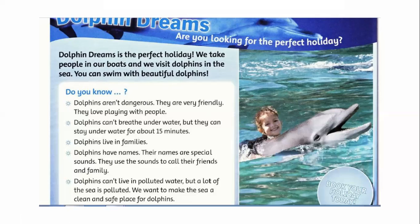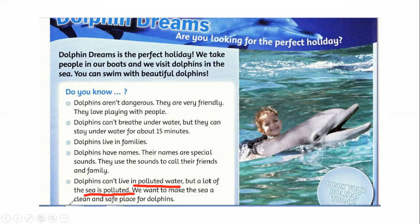Dolphins can't breathe underwater, but they can stay underwater for about 15 minutes. Dolphins live in families. Dolphins have names — their names are special sounds, and they use these sounds to call their friends and families. Dolphins can't live in polluted water; they need clean water. Unfortunately the sea is polluted, and what we must do is clean the sea and make a safe place for the dolphins.